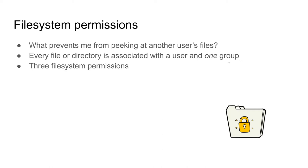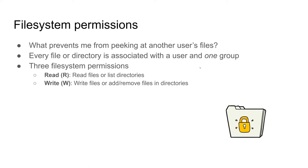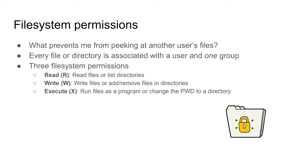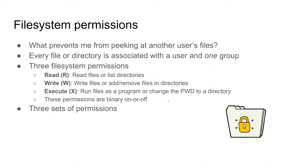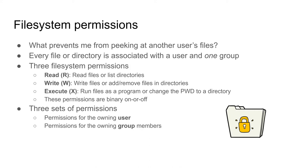There are three types of file system permissions. The permission to read a file, or list the contents of a directory. The permission to write to a file, or add and remove files in a directory — writing just means editing a file. And the execute permission: for a file, you can run it as a program; for a directory, you can change your working directory into it. These are binary on/off, and there are three sets of them: read/write/execute for the user, for group members of the group that owns the file, and for everyone else.